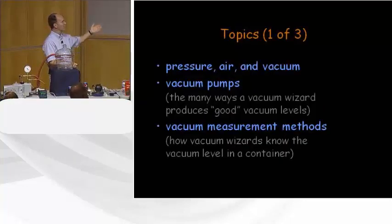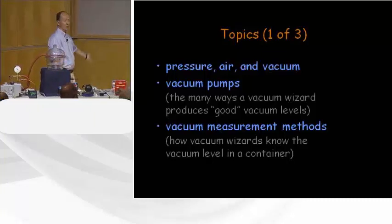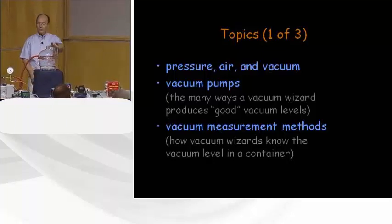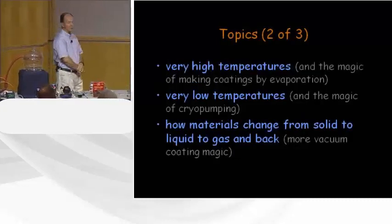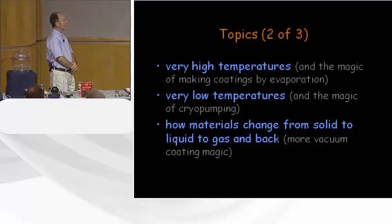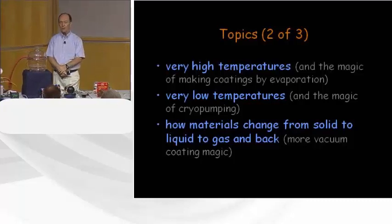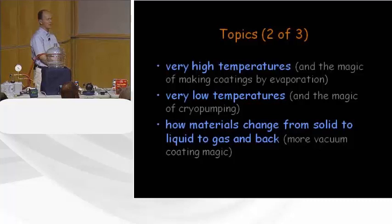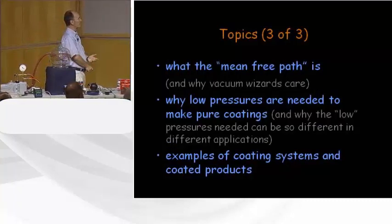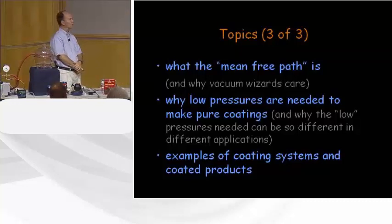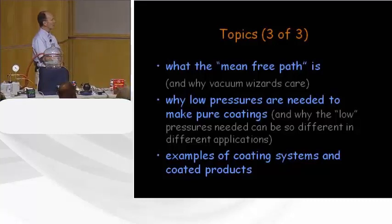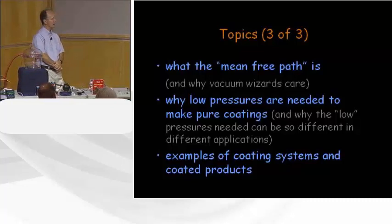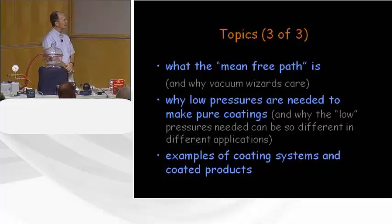We'll cover a range of topics, including pressure, air, and vacuum. We'll talk about vacuum pumps and the many ways a vacuum wizard uses to produce good vacuum levels. We'll talk about vacuum measurement methods, extremes in temperature, how we make coatings by evaporation, how materials change from solid to liquid to gas and back. We'll cover mean free path, why low pressures are needed for vacuum coatings, and close with examples of state-of-the-art coating systems and products.